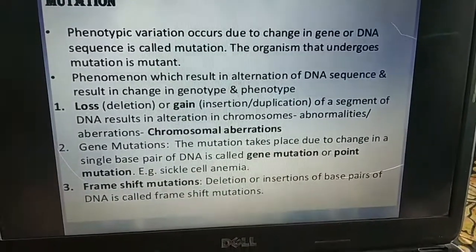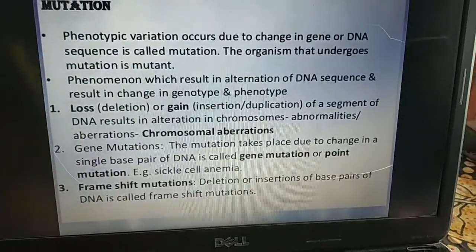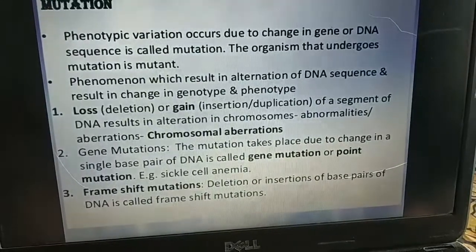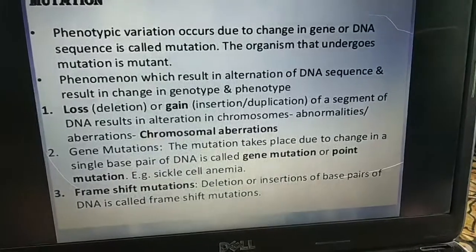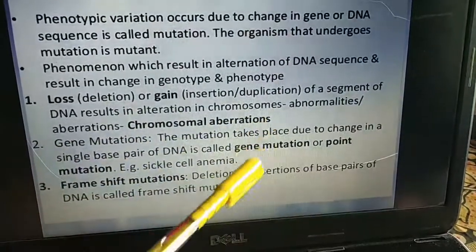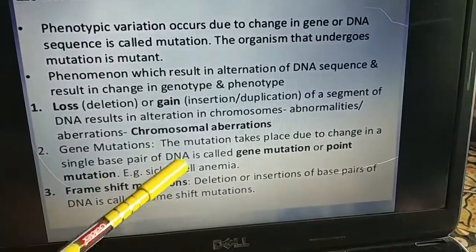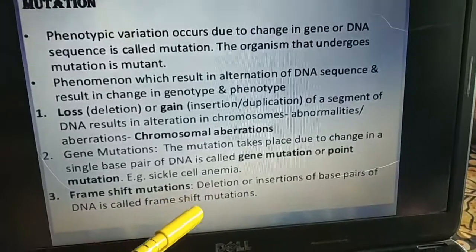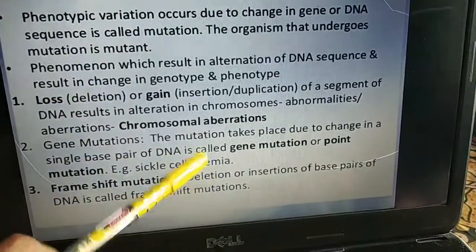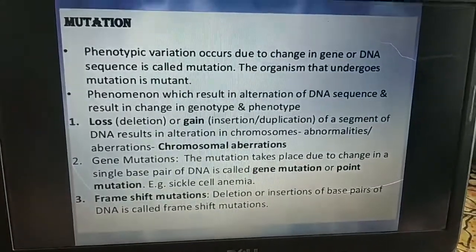Gene mutation, or point mutation, is the mutation that takes place due to a change in a single base pair of DNA. Example: sickle cell anemia. This slide is important for your one-marks exam. Frame shift mutation is the deletion or insertion of base pairs of DNA, which is one type of loss and gain mutation — either base pairs are deleted or inserted — and that is called frame shift mutation. This is the basic overview of mutation.